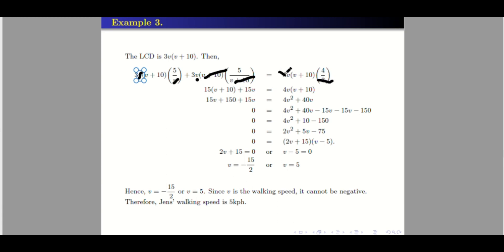Distributing: 15 times (V plus 10) gives 15V plus 150. Copying 15V on the right side and distributing 4V gives 4V squared plus 40V. Since this is quadratic in form, we transpose everything to the right side: negative 15V and negative 150. Combining like terms: 40V minus 15V minus 15V equals 10V. So we have 4V squared plus 10V minus 150 equals 0. We can divide everything by 2: giving 2V squared plus 5V minus 75 equals 0.